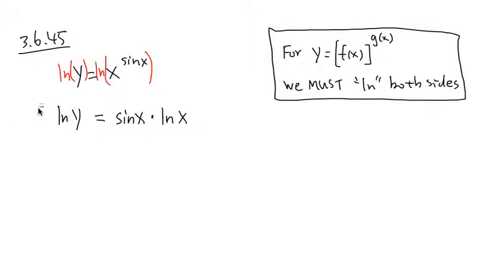And now, we are ready to take the derivative of this. So d dx all the way in front, put parentheses around it, and the derivative of ln y is going to be 1 over y times dy dx, the chain rule.